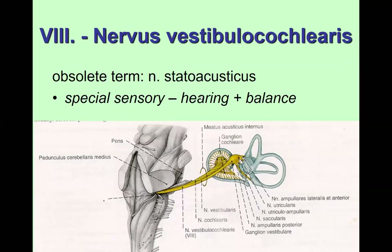That concludes the facial nerve. Now let's talk about the vestibulocochlear nerve — the only special sensory nerve with its nuclei within the brainstem. The old term is statoacoustic nerve, which tells you it is for balance and hearing. The vestibulocochlear nerve runs into the vestibule and cochlea of the inner ear, which is composed of the cochlea, the vestibule, and three semicircular canals and ducts.